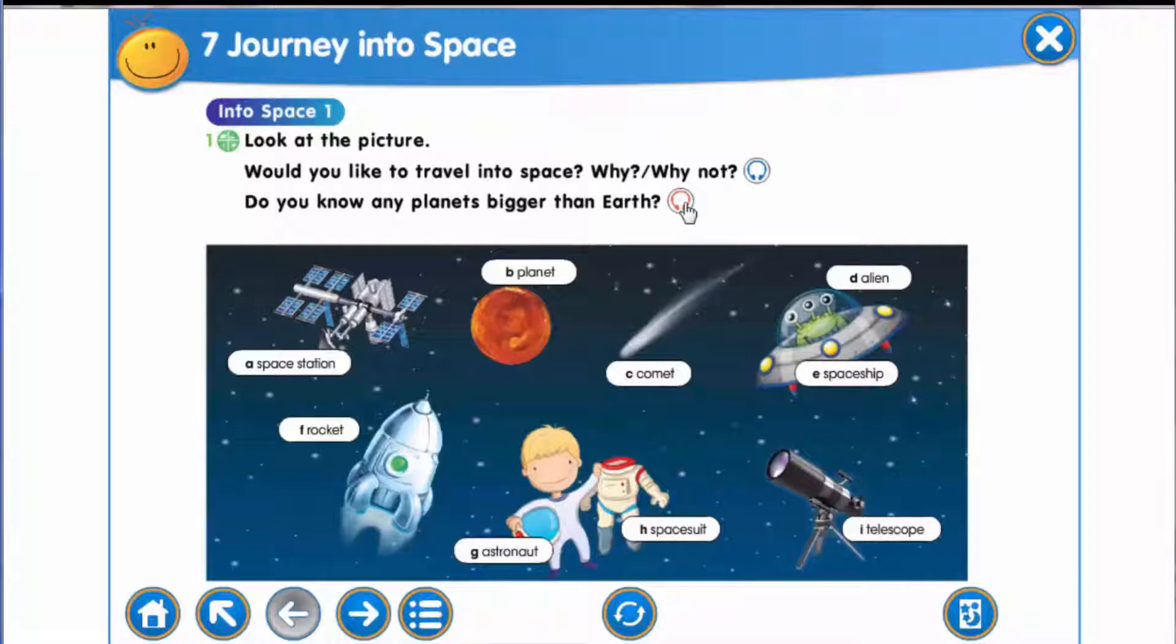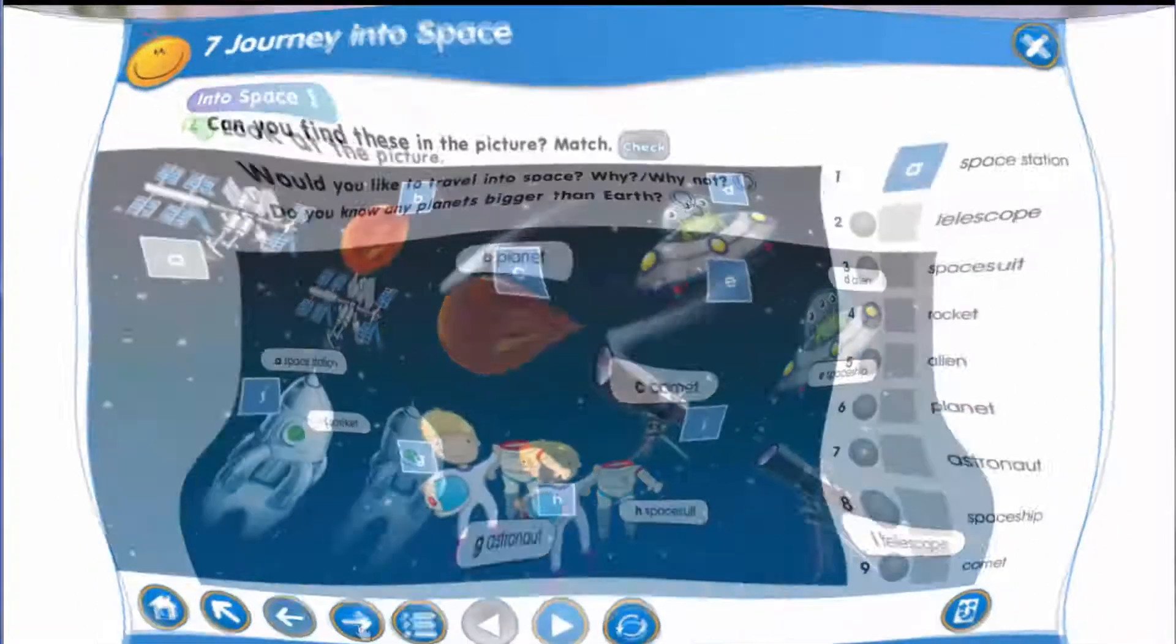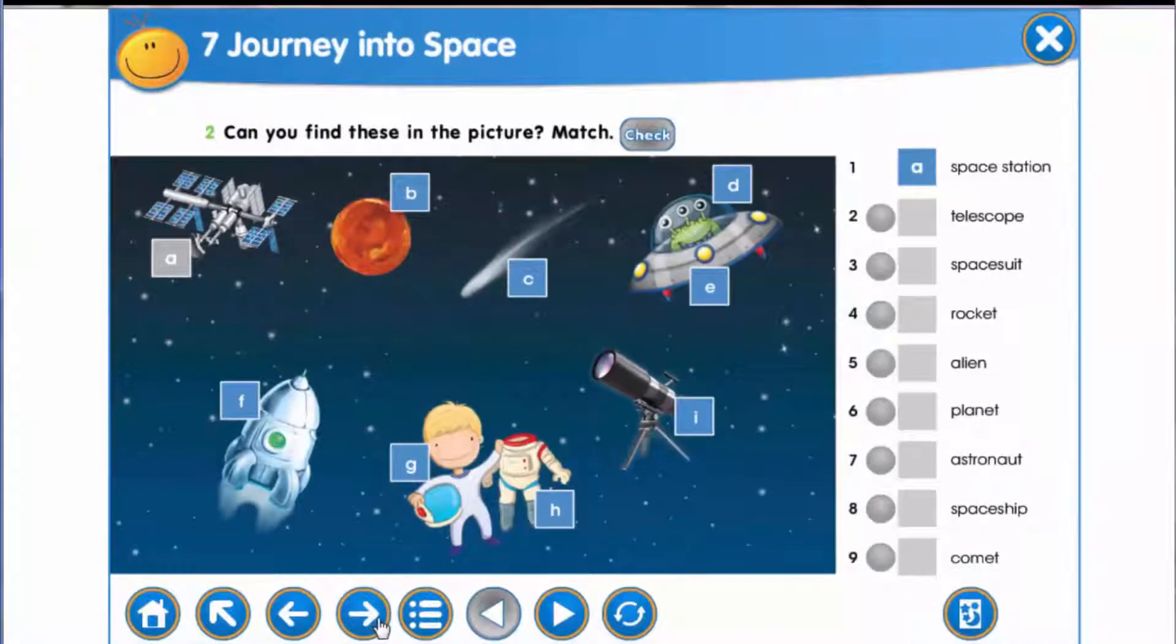The answer is Jupiter, Saturn, Uranus and Neptune are bigger than Earth. Now let's do exercise two. Can you find these words in the picture? You are to match these words with the letters at the picture.